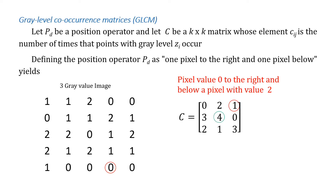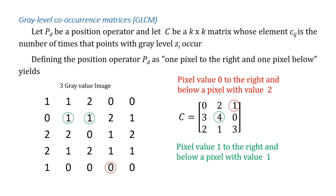For the 4 that we see in the matrix, that comes from searching for the pixel values of 1 to the right and below a pixel value with also a value of 1, as highlighted in the image on the left. This high value of 4 in matrix C indicates that there is a line at a 45 degree angle of pixel intensity 1.